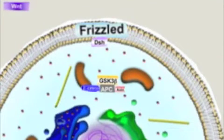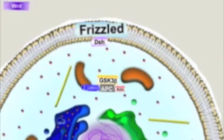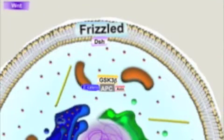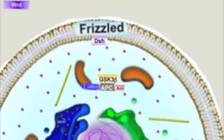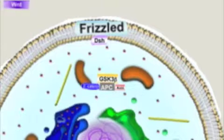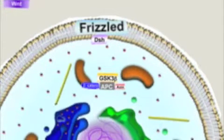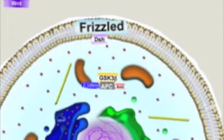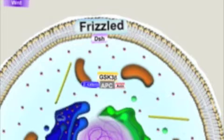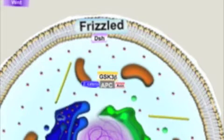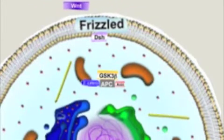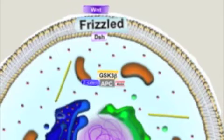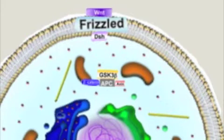This lesson is going to show you how the Wnt protein initiates gene transcription. You should be aware the items in this demonstration are not to scale. First, the Wnt protein binds to its receptor, a member of the frizzled family of proteins.